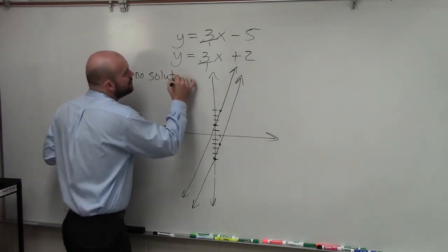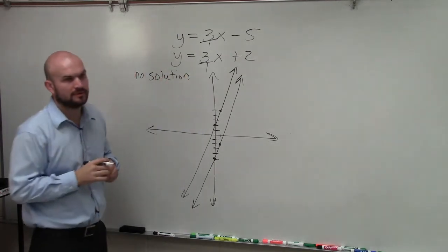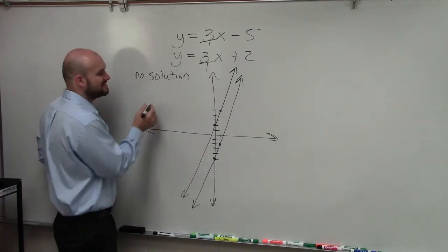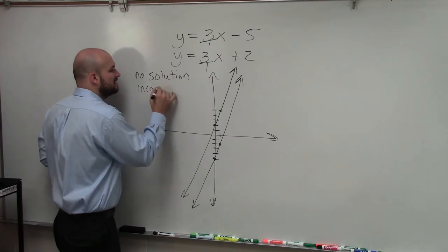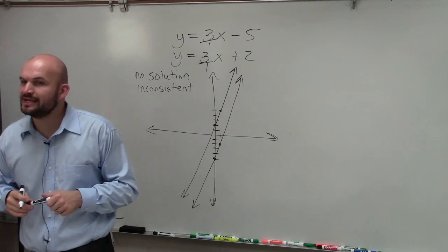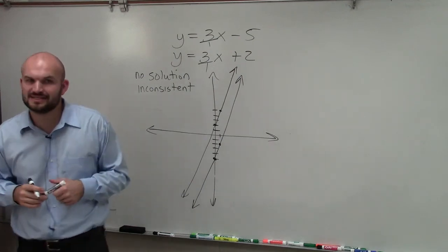So we write no solution. And if there's no solution, then we do not have a consistent system. We have an inconsistent system. So when you get an equation with parallel lines, you're going to write inconsistent.